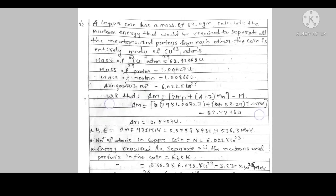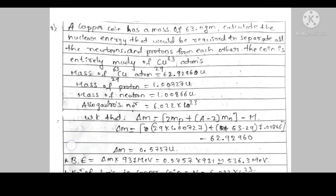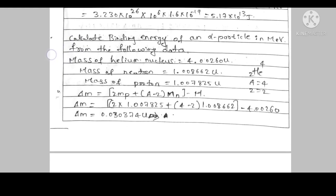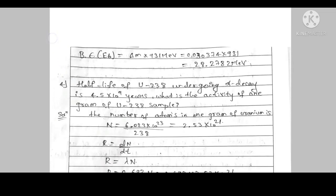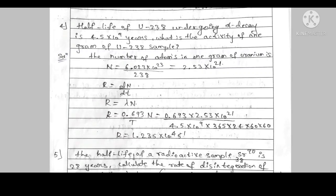The same method applies for any binding energy and binding energy per nucleon calculation. For the third problem also, you calculate binding energy and binding energy per nucleon. For the question about binding energy, the final answer will be in joules. To convert to electron volts, multiply by 1.6 × 10^(-19). Is it clear, children? Yes, this is the method.